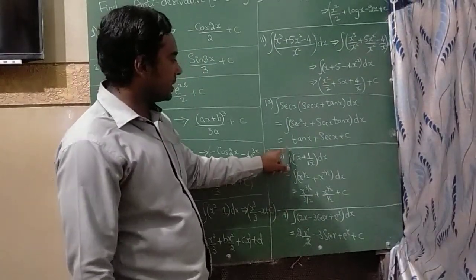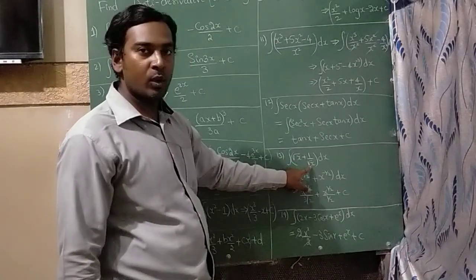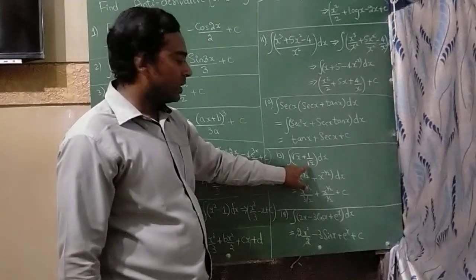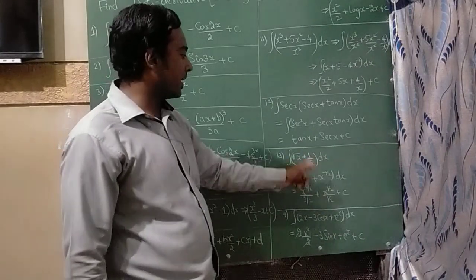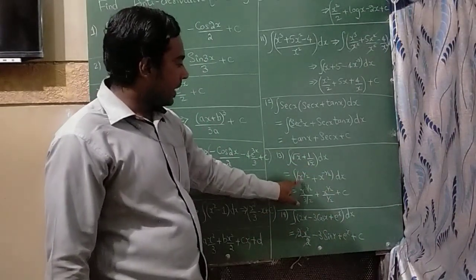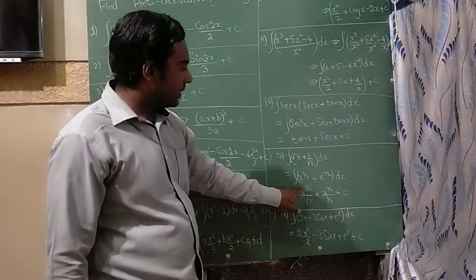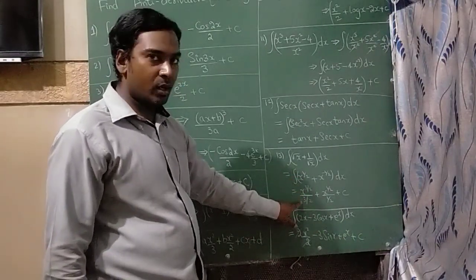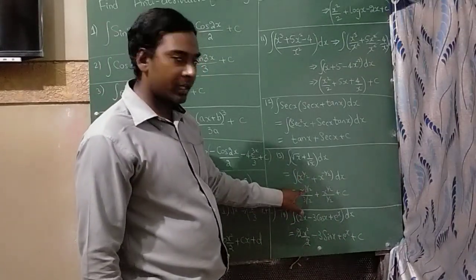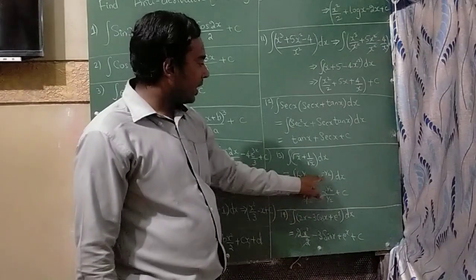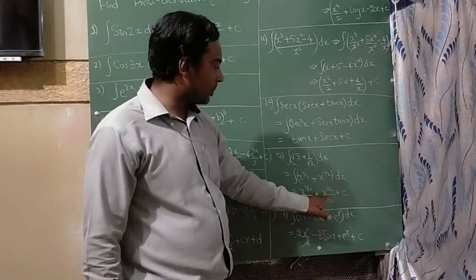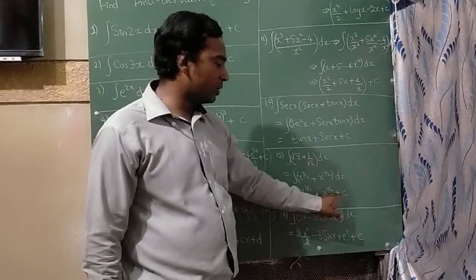The thirteenth question is integration of (root x plus 1) divided by root x. Root x can be written as x raise to 1 by 2, and the denominator root x as x raise to minus 1 by 2. Integration of x raise to 1 by 2 gives x raise to 3 by 2, with 3 by 2 in the denominator. A small technique: 2 plus 1 is 3, and 2 minus 1 is 1, giving x raise to 1 by 2 in the denominator, plus c.